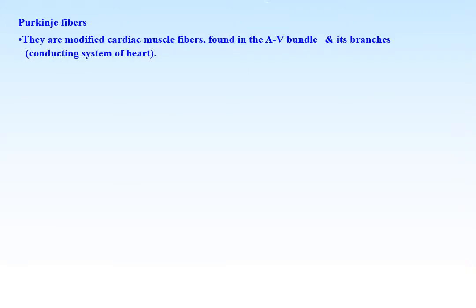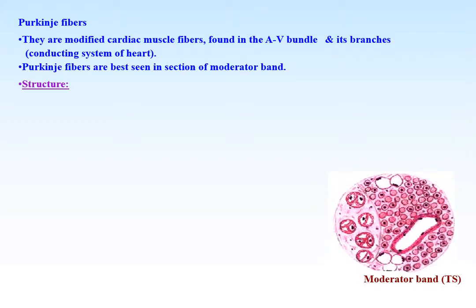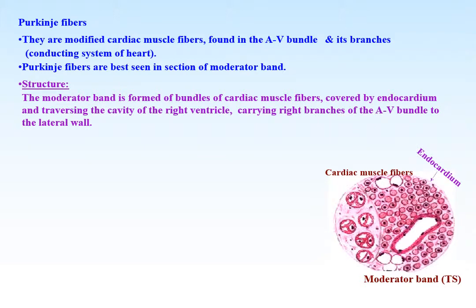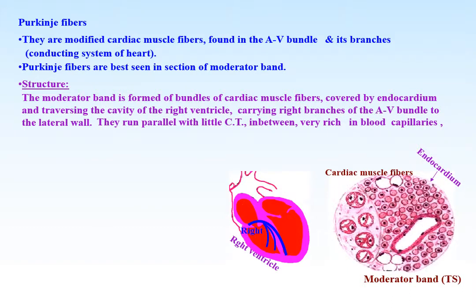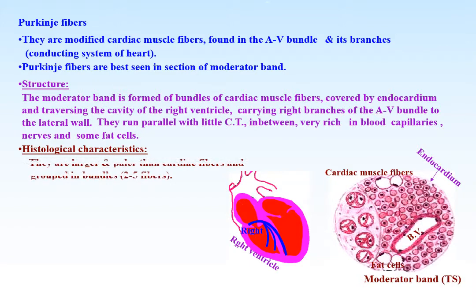Purkinje fibers are modified cardiac muscle fibers found in the AV bundle and its branches. They are best seen in sections of the moderator band. The moderator band is formed of bundles of cardiac muscle fibers covered by endocardium, traversing the cavity of the right ventricle carrying right branches of the AV bundle to the lateral wall. They run parallel with little connective tissue in between and are rich in blood capillaries, nerves, and some fat cells.